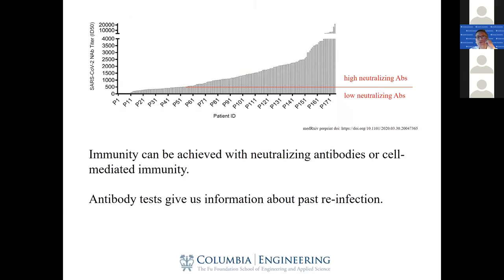What about humans? A lot of subjects looked at whether they produce antibodies that could actually neutralize the virus — over 70% show that. Immunity can be achieved in different ways; it's not just neutralizing antibodies, there are other mechanisms as well. The evidence is showing that a lot of people develop highly neutralizing antibodies, and there are very few reports of any reinfection taking place.